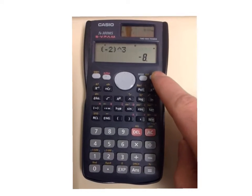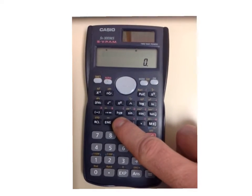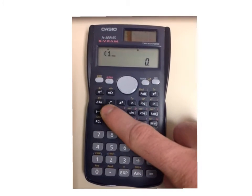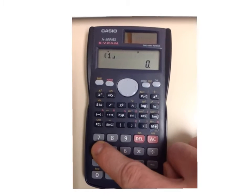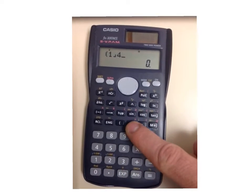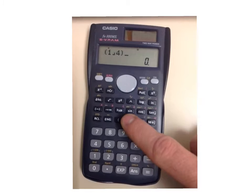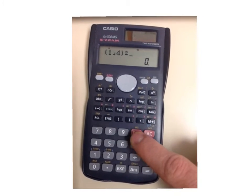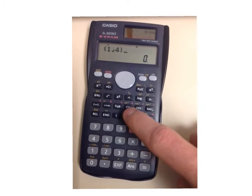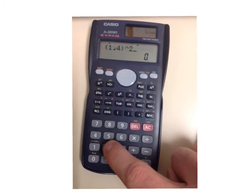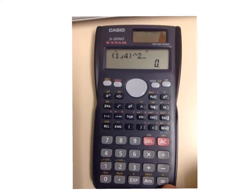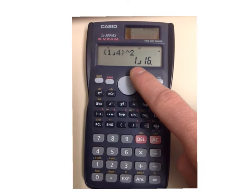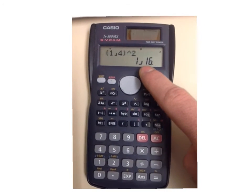And if you want to do a fraction, say you wanted to do the fraction 1 over 4, here's your fraction button. So 1 over 4 looks like that, to the exponent 2. You can press your exponent of 2 button like that, or you can just use the exponent button and get your answer. So this is how this calculator displays 1 over 16.